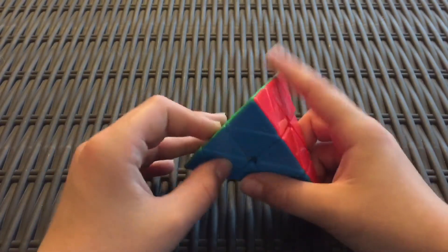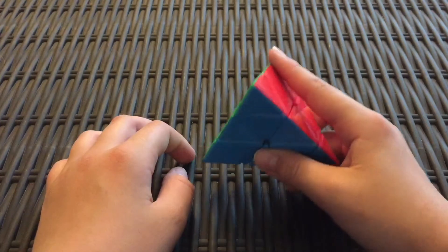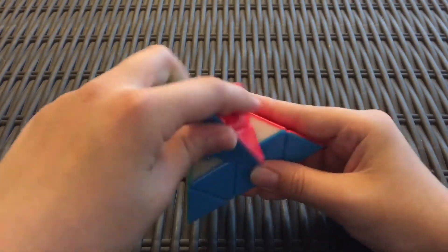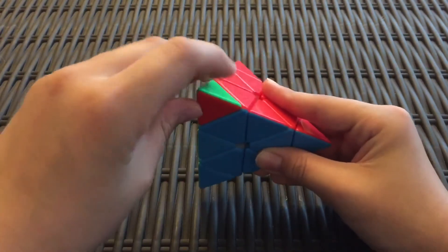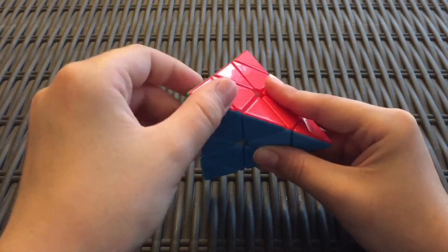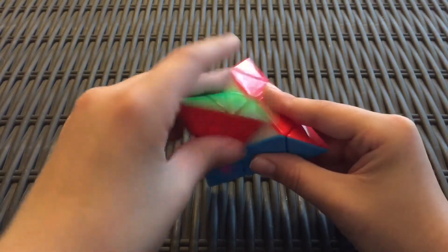So now for the lowercase letters. If you see a lowercase U, that is a lot like the uppercase U, except you only turn the tip. It's still in the same direction, but you only turn the tip, you don't turn any of the middle pieces.